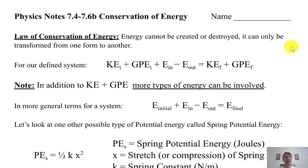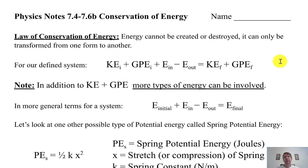Physics notes, units 7.4 to 7.6, part B: conservation of energy. I want to take a broader look at the law of conservation of energy, which states that energy cannot be created or destroyed — it can only be transformed from one form to another. Here's the general format we're using: your initial kinetic energy and GPE, plus any energy put in.